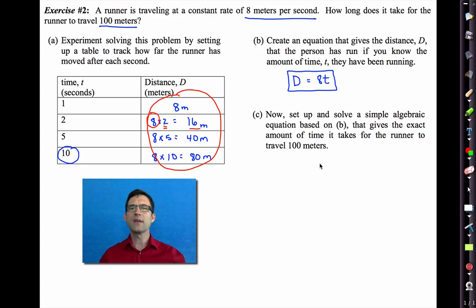Letter C says, now set up and solve a simple algebraic equation based on B that gives the exact amount of time it takes for the runner to travel 100 meters. Pause the video right now if you think you know how to do this, and if not, we'll be showing you how in just a moment. All right, let's go through it. Well, algebra says, if I know that the distance I want to run is 100 meters, then I'm going to substitute it right into this equation. 100 equals eight times t. Now in order to solve this, we're going to divide both sides of the equation by eight.